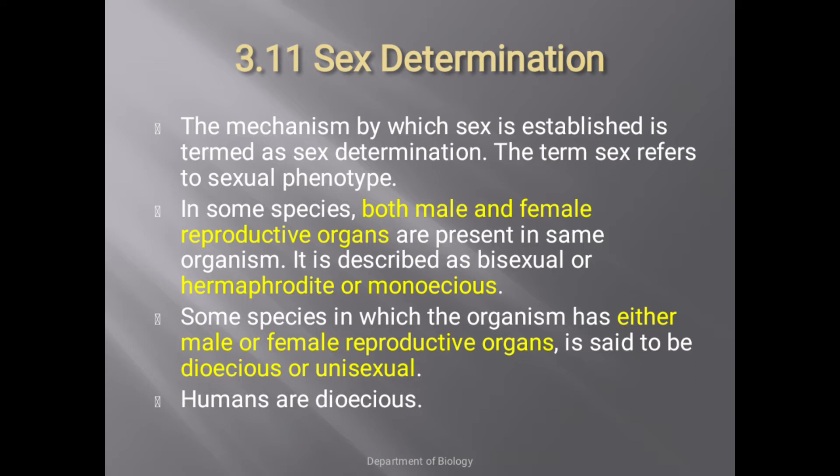In some species both male and female reproductive organs are present in the same organism; such organisms are described as bisexual, hermaphrodite, or monoecious — 'mono' means single. Whereas in other species, only male or female reproductive organs are present; such organisms are known as dioecious or unisexual. Humans are dioecious, meaning females and males are different.